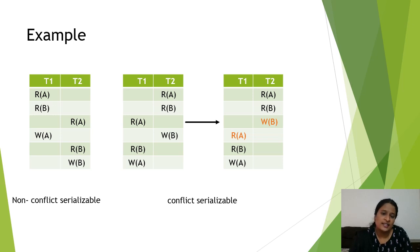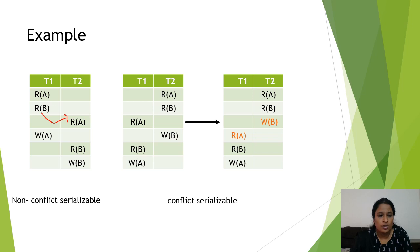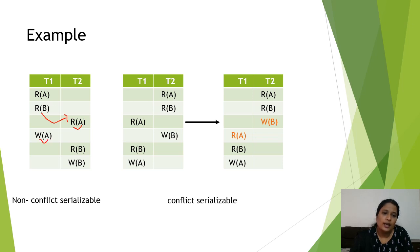Let's see the first example. It is a Non-Serial type of schedule because after executing the first two operations of transaction 1, the operating system is moved to transaction 2 — it is interleaved. I am checking whether R of A can be swapped with Write of A. No, it is not possible because, per condition 3, the read operation is working on data field A, and the write operation is also based on data field A. Since both operations work on the same data field, they cannot be swapped. So we call this schedule Non-Conflict Serializable.